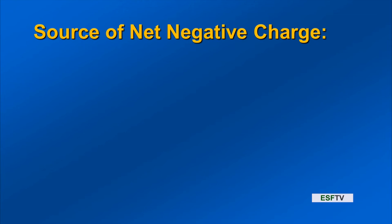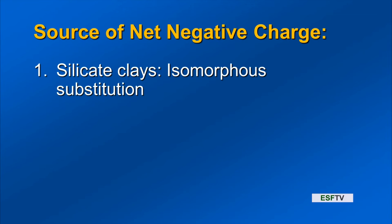Now we start to think: we told you the source of net negative charge on organic colloids, but we didn't really tell you where it comes from on the phylosilicates and others. So let's explore that. For silicate clays — the phylosilicates — the explanation for the net negative charge is isomorphous substitution. Let's explore this as a conceptual explanation for why we see net negative charge on these surfaces.